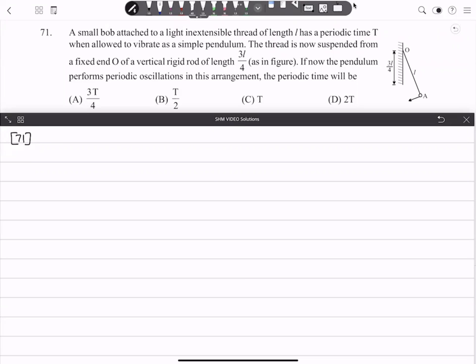Next question number 71. A small bob is attached to a light inextensible thread of length L and has a period T when allowed to vibrate as a simple pendulum. The thread is now suspended from a fixed end O of a vertical rigid rod of length 3L/4. If now the pendulum performs oscillation in this arrangement, the periodic time will be the question.